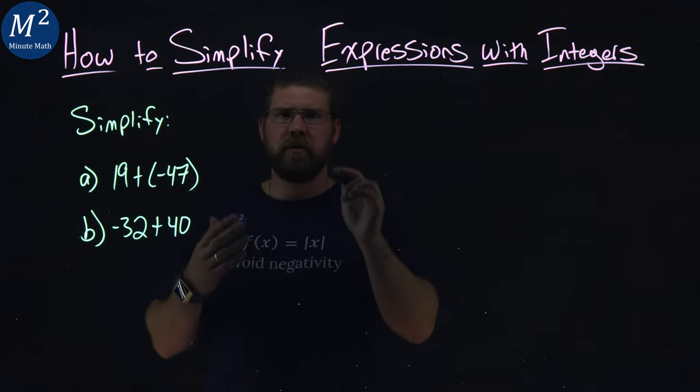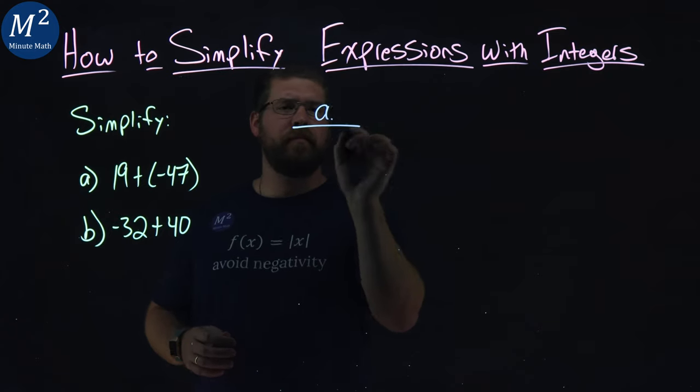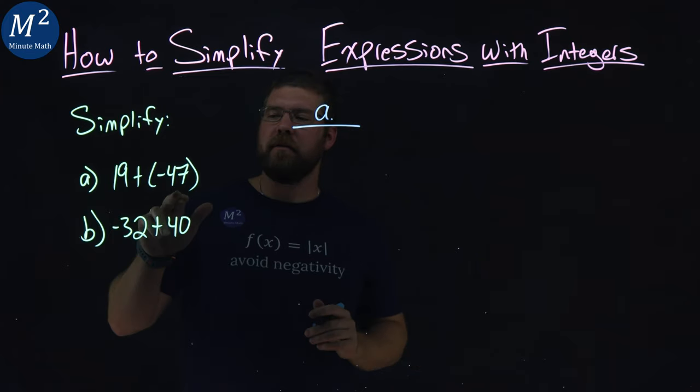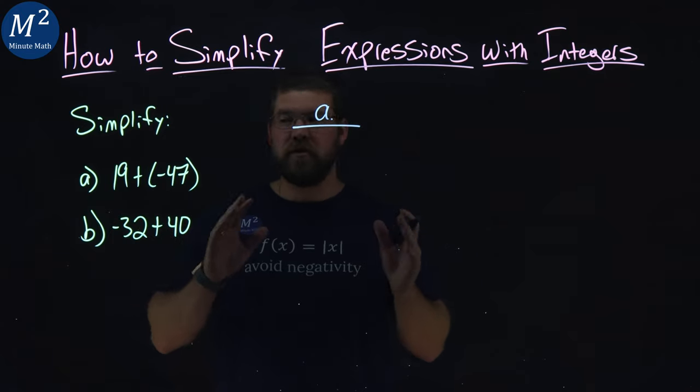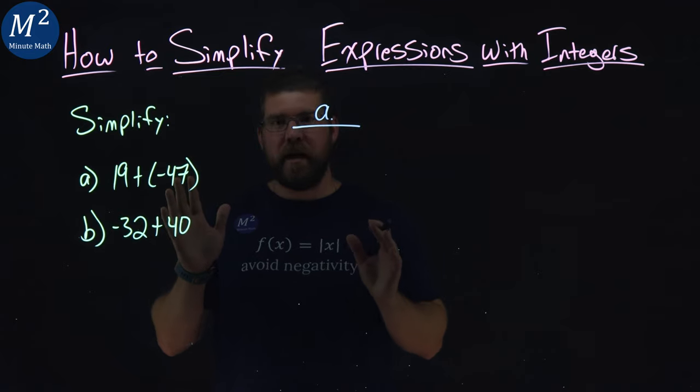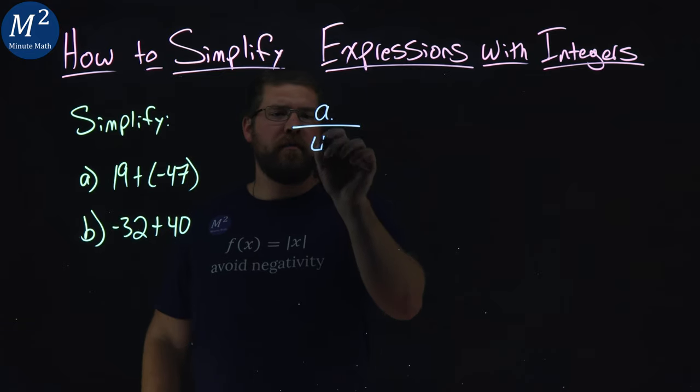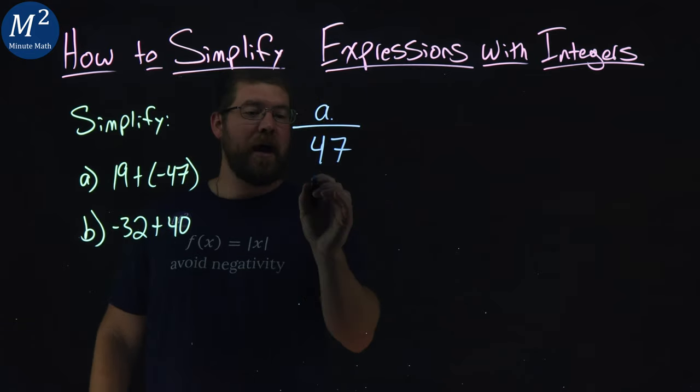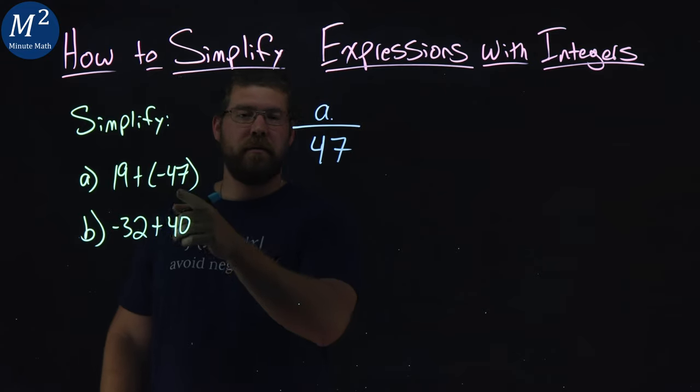So what I'm going to do is the traditional method here, and I'm going to stack these two numbers on top of each other, and I'm going to pick the larger of the two, ignoring the negative sign. So I have 47 here, and then I'm going to subtract the two, because they're opposite. We have addition and subtraction, or negative, positive and negative.